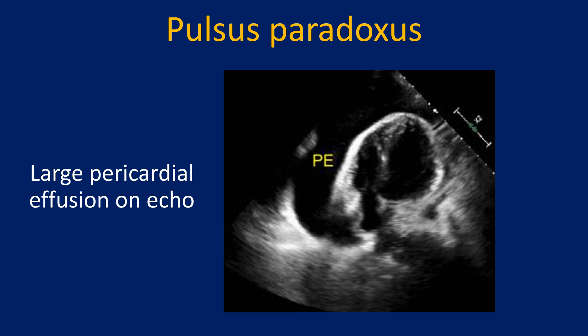Pulsus paradoxus is the typical finding in cardiac tamponade, though it can occur more commonly in obstructive airways disease. In obstructive airways disease, it is due to the wide swing in intrathoracic pressure. Other less likely causes are constrictive pericarditis and restrictive cardiomyopathy. It has also been reported in massive pulmonary embolism.